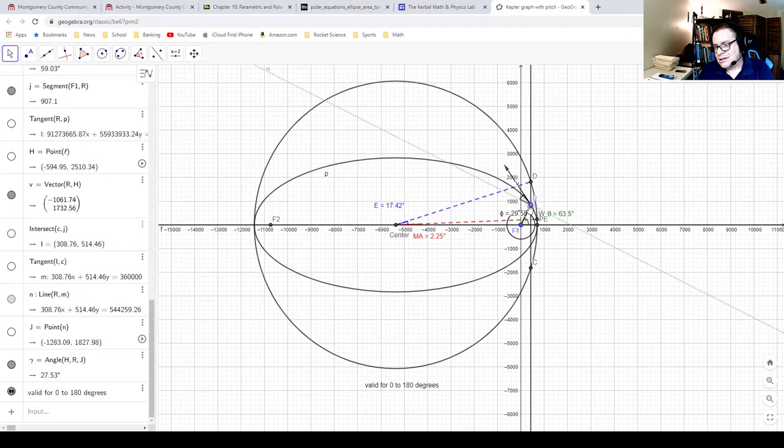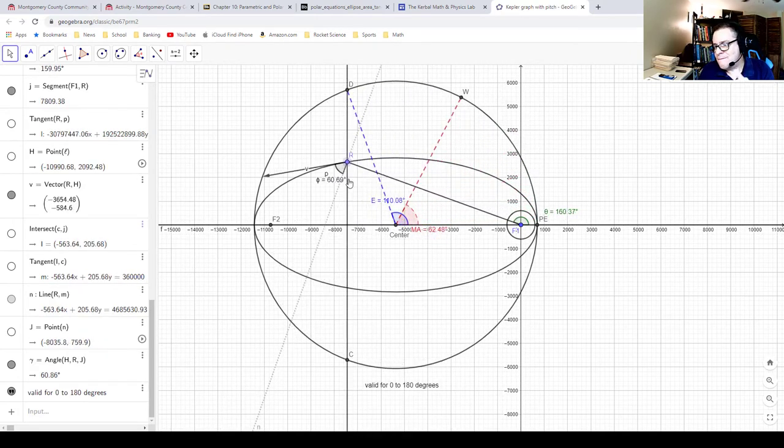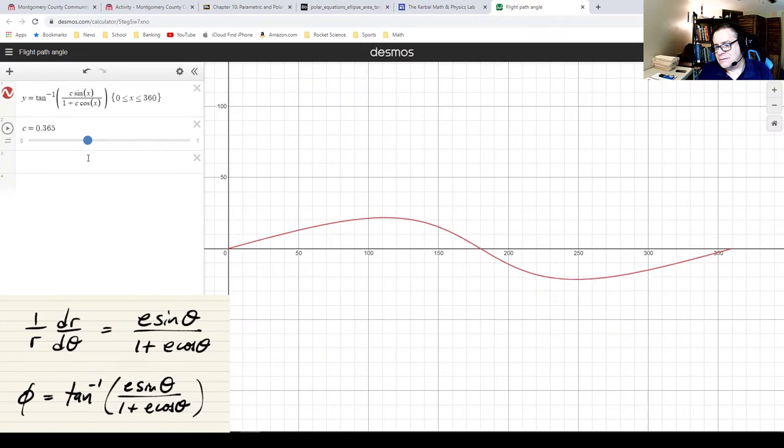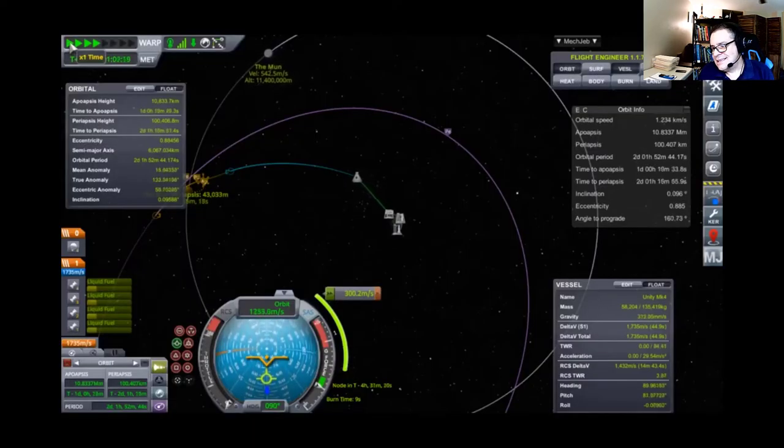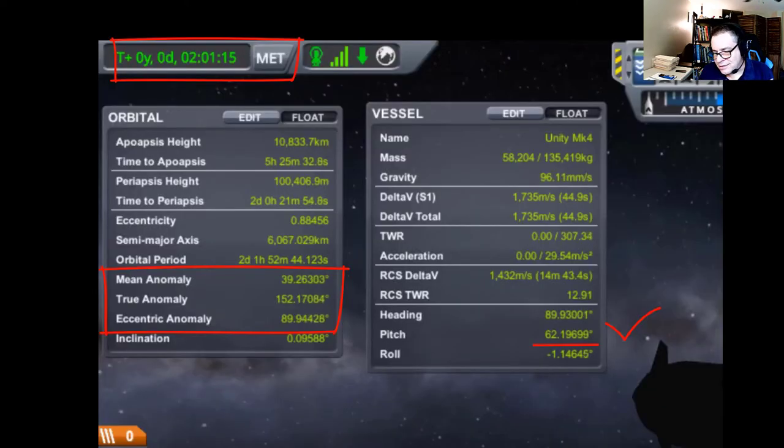Find the slope of the tangent to an elliptical flight path, and compute the point of maximum flight path angle. These are beautiful calculus lessons that a student can experience as well, directly engage with in KSP.